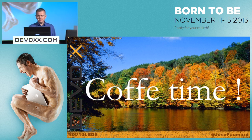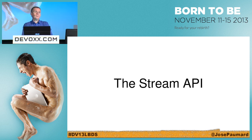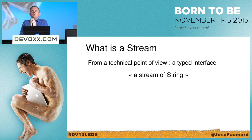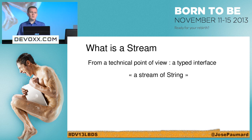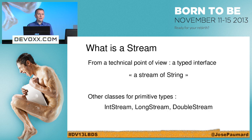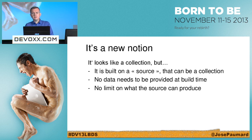Let's talk about the Stream API, which is a new thing in Java 8 and probably something that will really change the way we program applications very deeply. First, what is a stream? From a pure technical point of view, it's a typed interface, so we'll be talking about a stream of persons, a stream of strings, or of integers. There are other classes for primitive types, for performance reasons, to avoid boxing and unboxing. A stream might look like a collection, but it's not a collection.